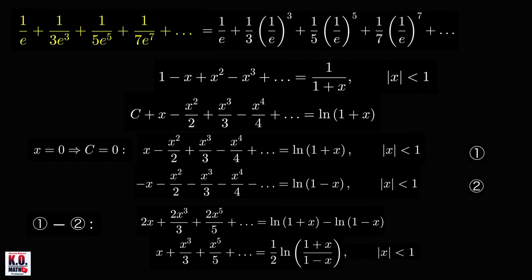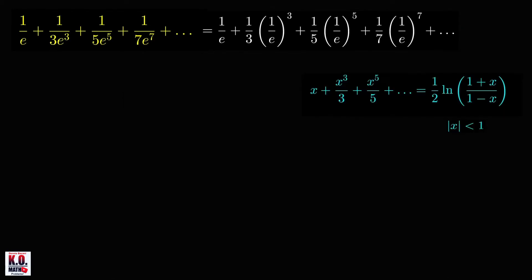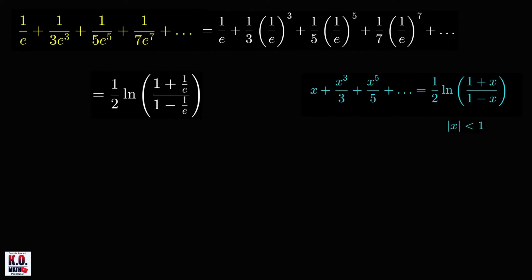Now we're ready to find the sum of this series. So using this formula that we have just derived, then we'll be able to get the sum of this series, which is equal to one half ln of 1 plus x, but our x is 1 over e. So this is x plus one third x cube plus one over five x raised to five plus one over seven x raised to seven plus and so on. So we'll get here 1 plus x or 1 plus 1 over e over 1 minus x or 1 minus 1 over e.